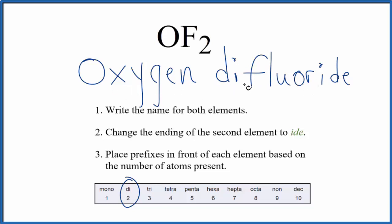If you were given the name, you'd know that oxygen difluoride is OF2. You have oxygen by itself, so there's only one. And the di tells you that there are two fluorine atoms. This is Dr. V with the name for OF2, oxygen difluoride. Thanks for watching.